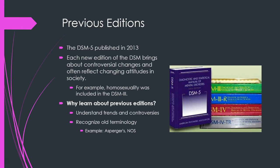The DSM-5 was published in 2013, and each new edition has brought controversies, really reflecting changing attitudes in society. For example, DSM version 3 included homosexuality as a mental disorder, showing how the DSM is in some senses a cultural artifact. It's important to understand trends and controversies and to recognize old terminology. For instance, in the DSM-4 there was a condition called Asperger's, but in the DSM-5 it's been absorbed into the autism spectrum.